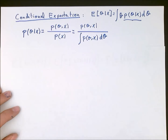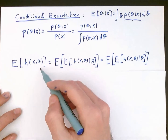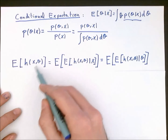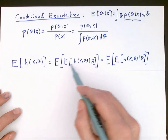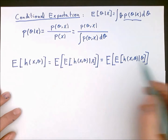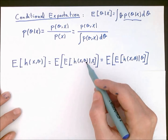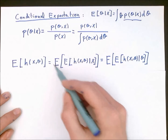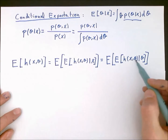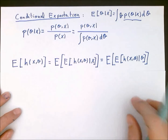A second interesting result on conditional expectations is that if we have a function h of two random variables x and z, we can compute the expectation with respect to both variables by first computing the conditional expectation given one variable and then taking the expectation with respect to the other. We can take the expectation of h conditioned on x and then take the expectation over x, or take the expectation of h with respect to x for fixed theta and then take the expectation over theta.